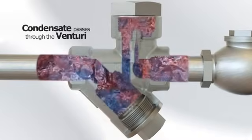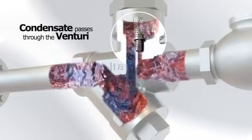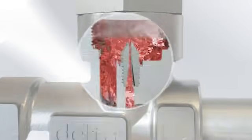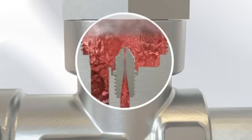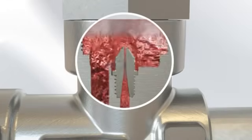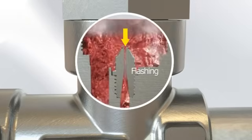This hot condensate passes through the orifice and enters the mouth of the Venturi. As the condensate passes through the mouth of the Venturi, there is a sudden pressure drop, which causes a percentage of the hot condensate to change phase from condensate to steam, a phenomenon known as flashing.